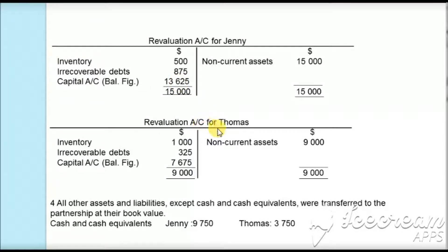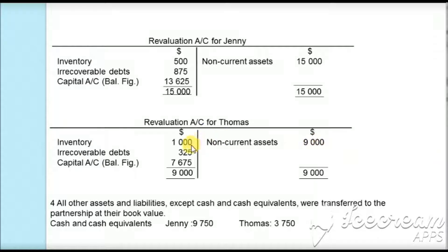We make the revaluation account for Thomas in the same way. Non-current assets are credited as $9,000, and the decrease in inventory and irrecoverable debts are debited as losses. Balancing $9,000 minus $1,000 minus $325 gives $7,675, which will be transferred to the revised capital account.